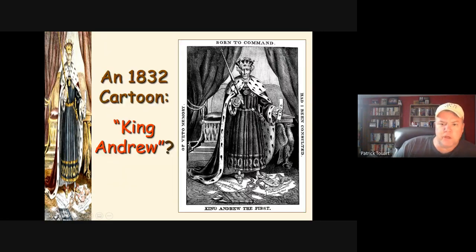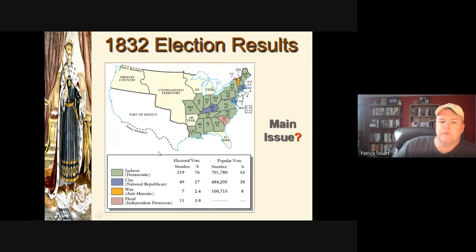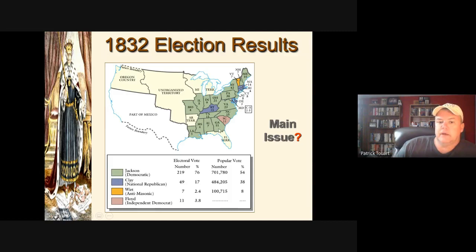The 'King Andrew the First' cartoon depicted Jackson in all the regalia of a monarch, the Constitution shredded at his feet, wielding the veto like a king — this is where the Whig Party was born, as critics of Jackson. In the 1832 election, there was no Whig Party yet. Henry Clay, the last National Republican candidate, won only his home state and a couple Eastern states. The tariff and bank issues were actually seen around the country as Jackson winning those battles.